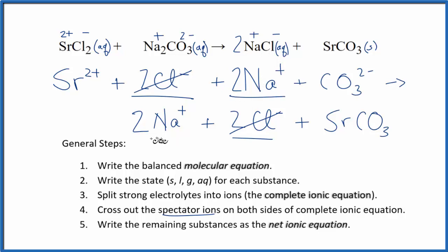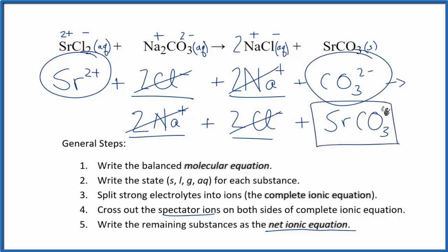2 sodium ions, 2 sodium ions. We can cross those out. But everything else, that's unique. So we have our net ionic equation. We have our strontium ion plus our carbonate ion, and we get the solid strontium carbonate.